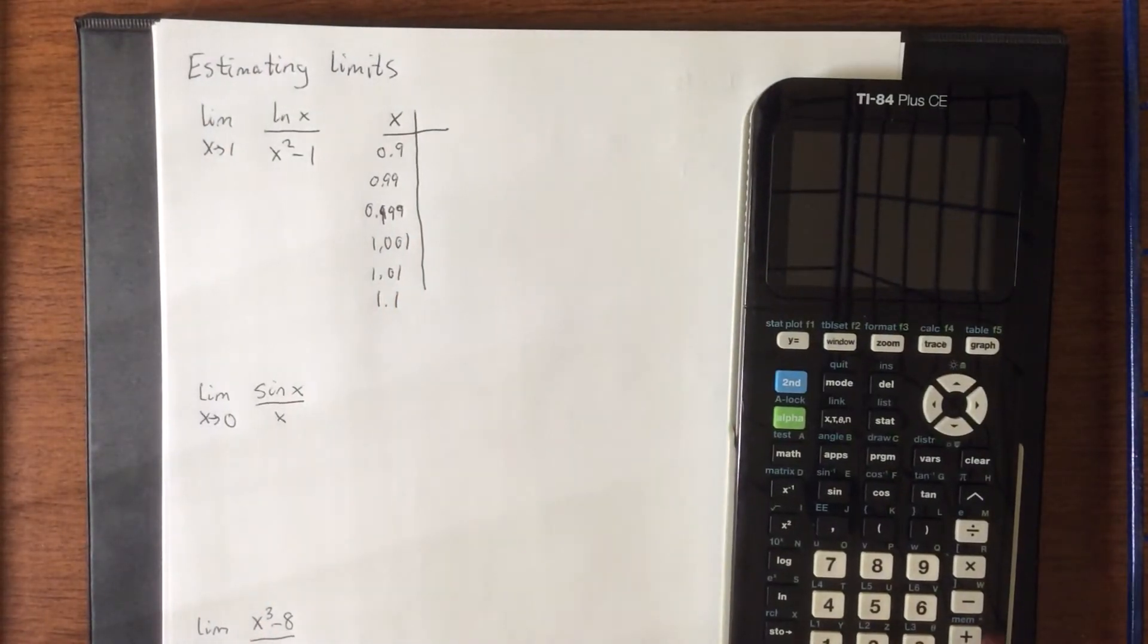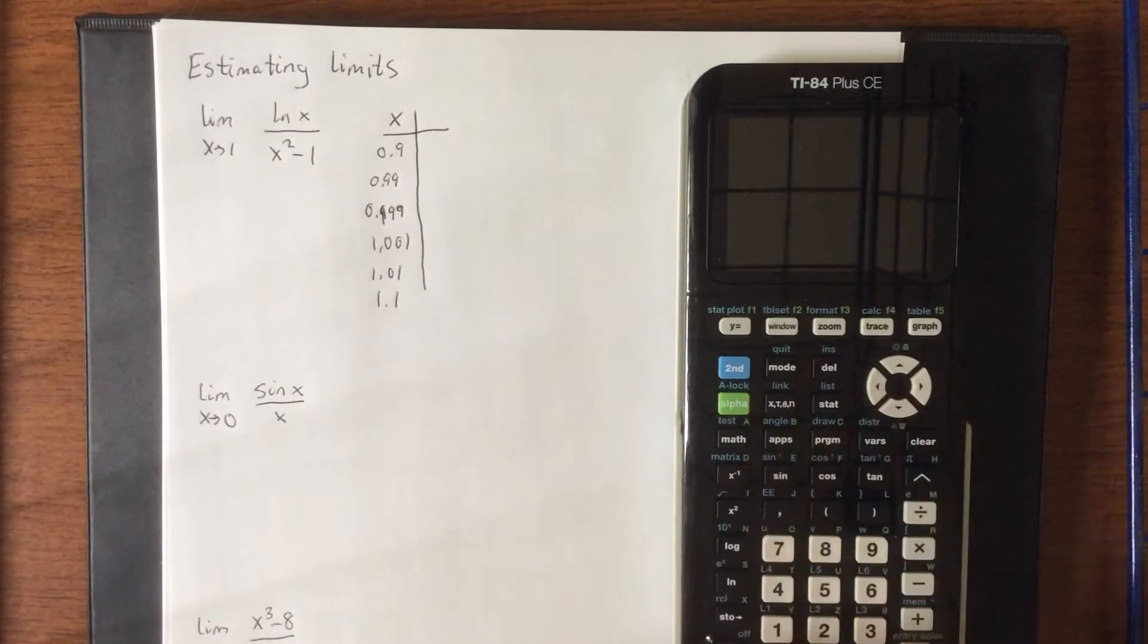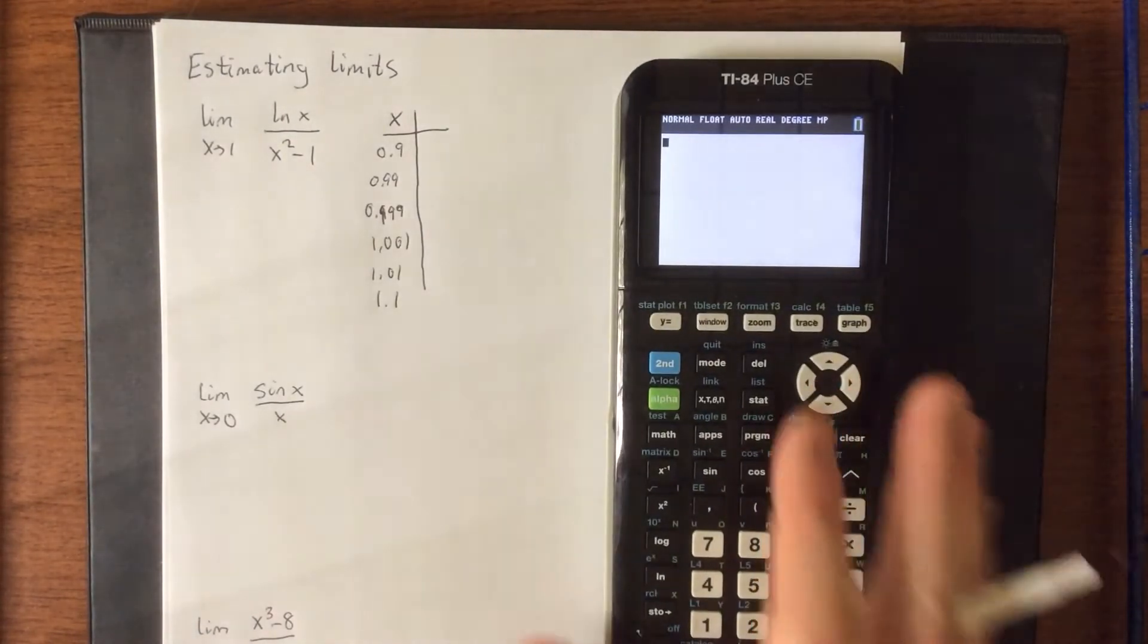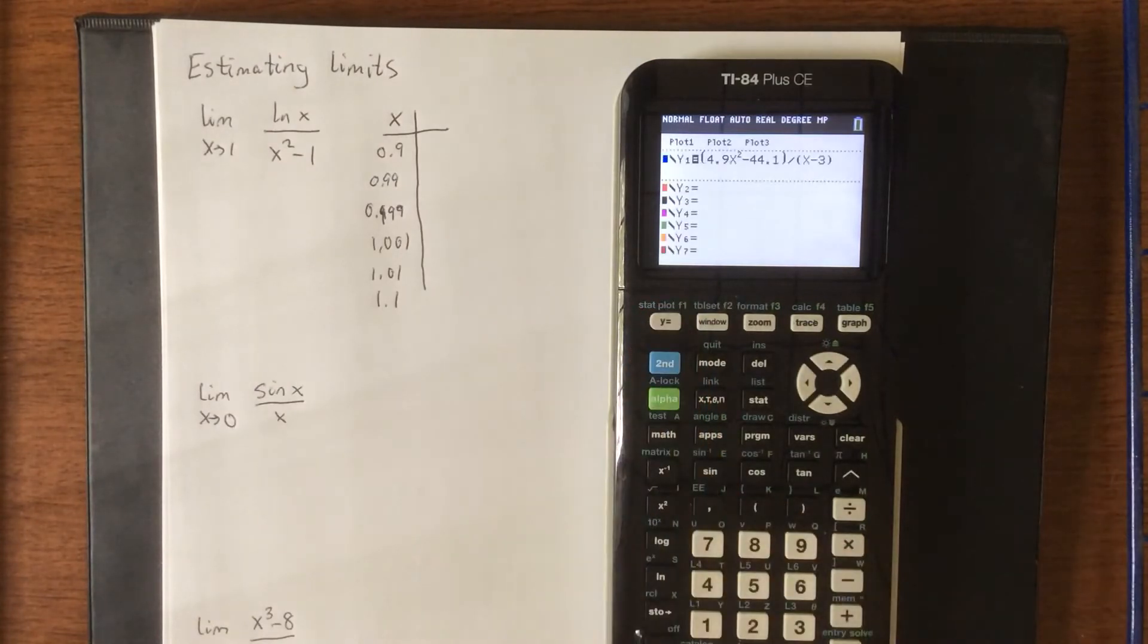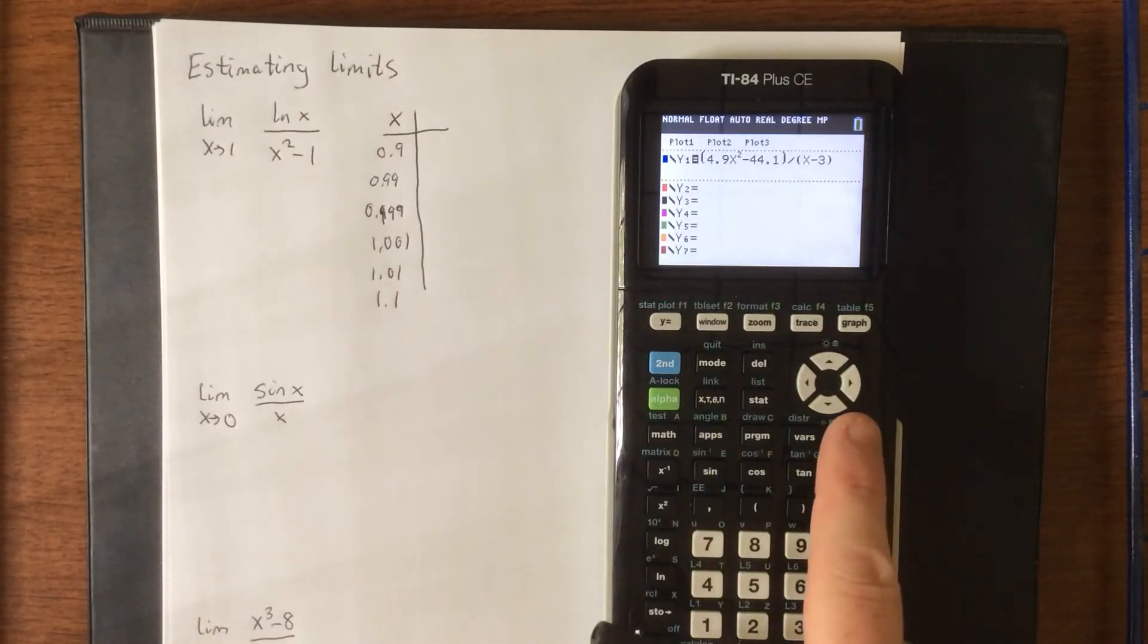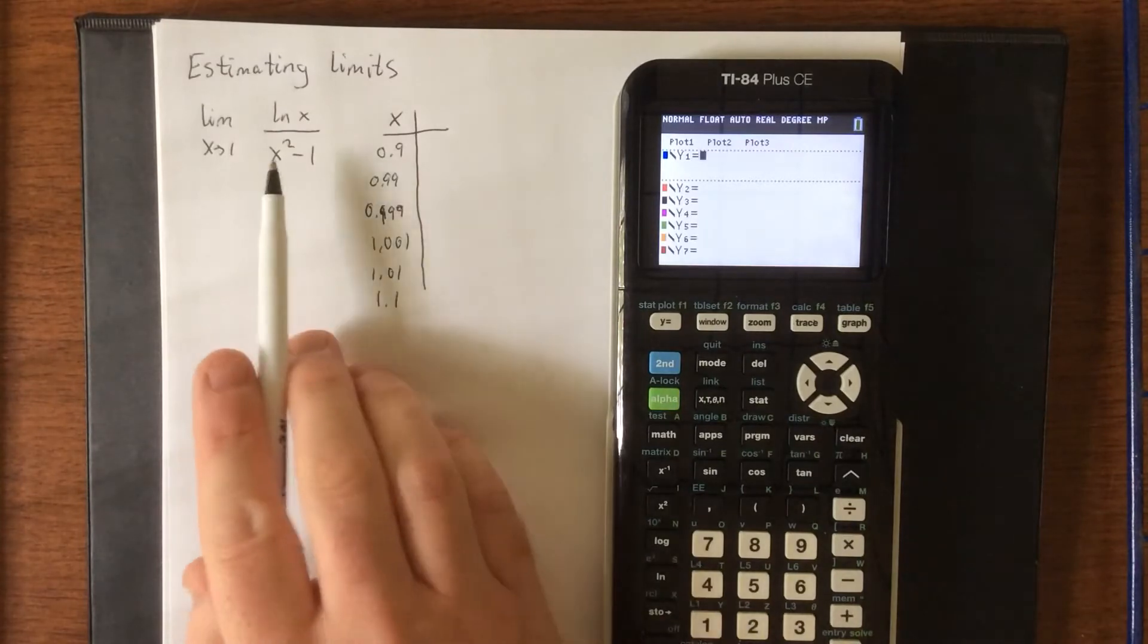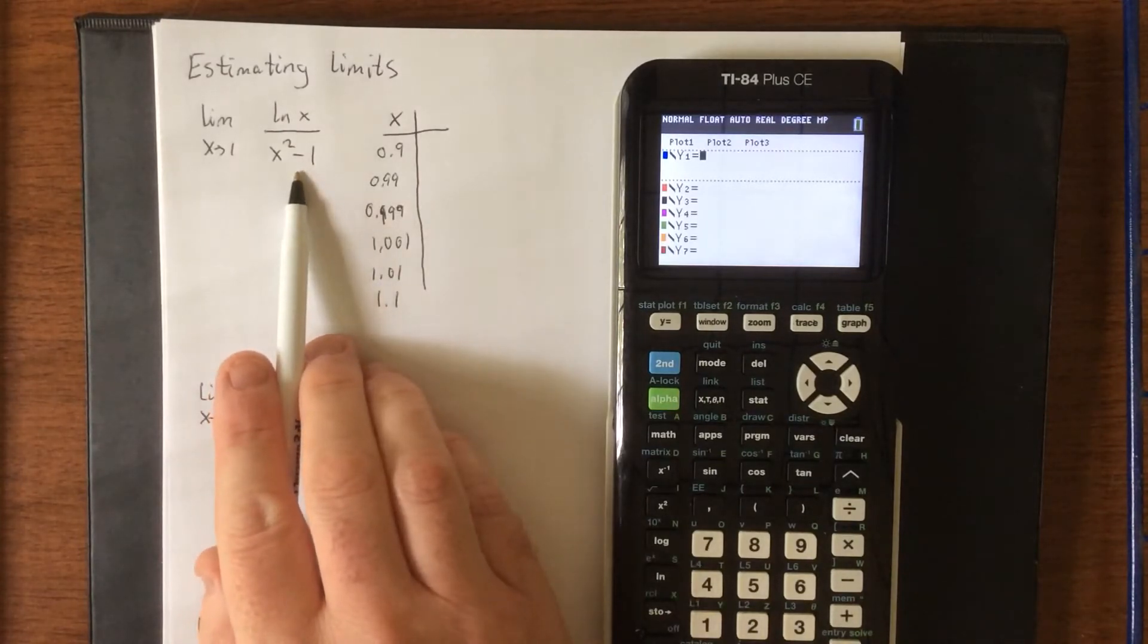Now, the process that we're going to do for this is identical to the process as what you saw in the last section's videos. So from the graphing calculator, I'm going to go to the y equals menu, clear out anything that was there from previous examples, and input the expression into which we'll be plugging these x values.